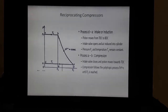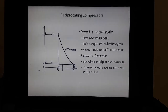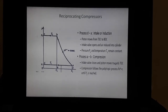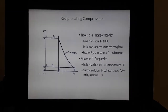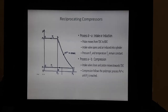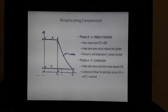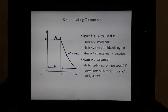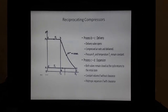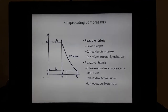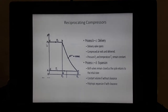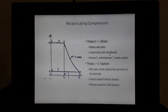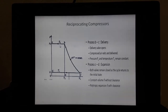Process A to B is the compression process. During this process the intake valve closes and the piston moves towards the top dead center. The compression may be polytropic, isothermal, or adiabatic. Process B to C is the discharge process; during this process the discharge valve opens and compressed air is sent to the environment, to the application, or stored in a tank.